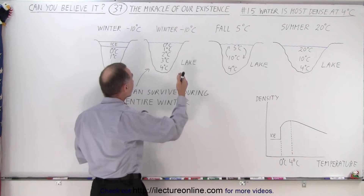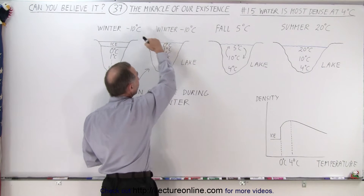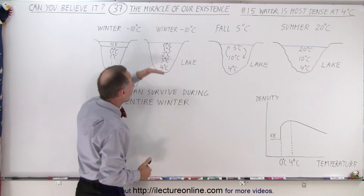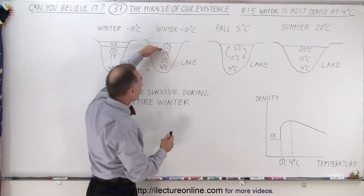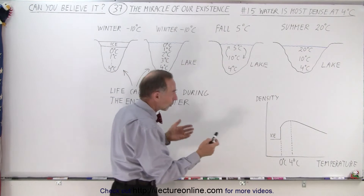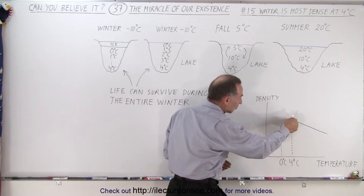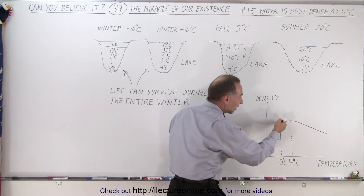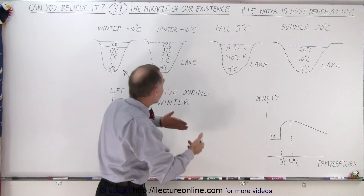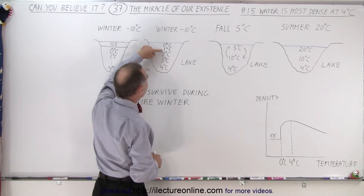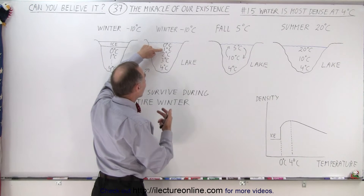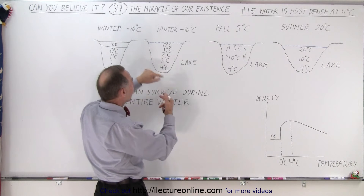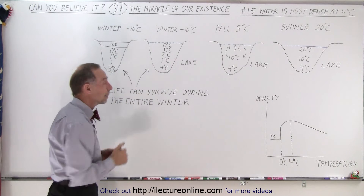Then as it becomes winter and the temperature drops to minus ten degrees Celsius, the water at the top gets colder and colder and eventually reaches zero degrees Celsius. Below that is water at one degree Celsius, because that is more dense than water at zero degrees Celsius. Looking at the density curve, at four degrees Celsius water is most dense, but at three, two, one, and zero degrees it becomes less and less dense, so it floats on top of the warmer water below. One degree Celsius is less dense than two degrees, which is less dense than three degrees, which is less dense than four degrees Celsius at the very bottom.